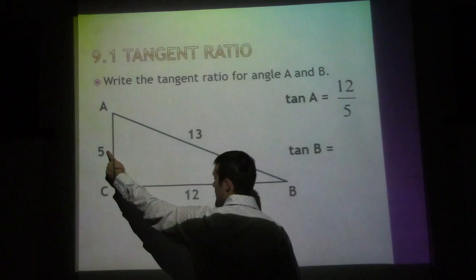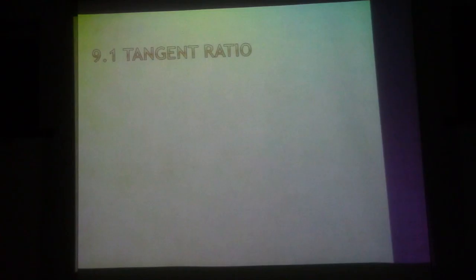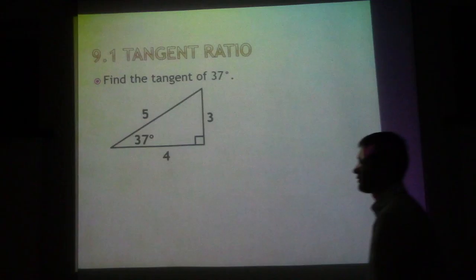If we want tangent of angle B, we start at angle B, the side opposite would be 5 over 12. So this allows us to actually find the measure of an angle.